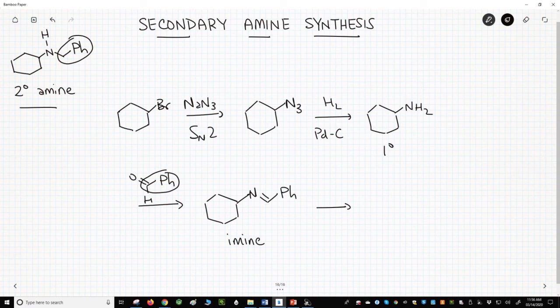We can then treat our imine in our last step with sodium borohydride to make our secondary amine. That's it. We've made a secondary amine.